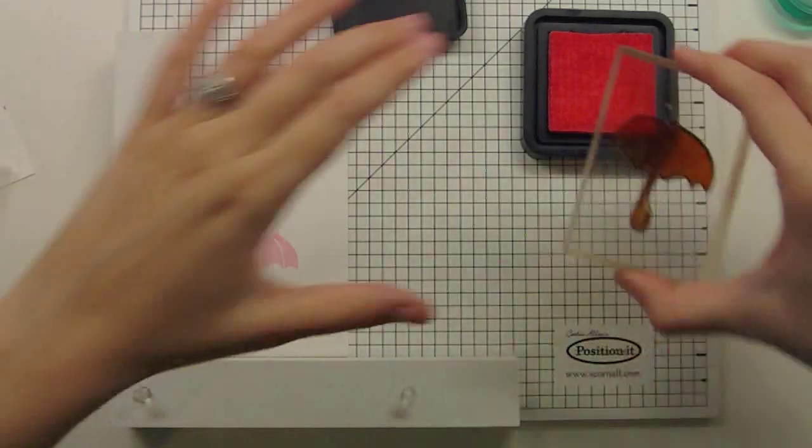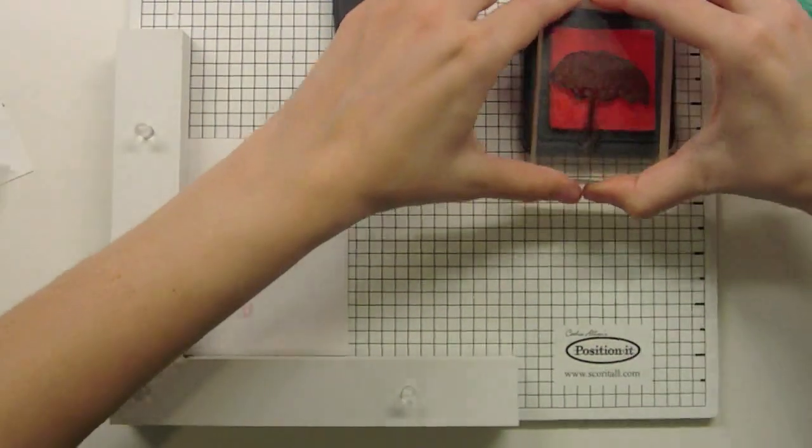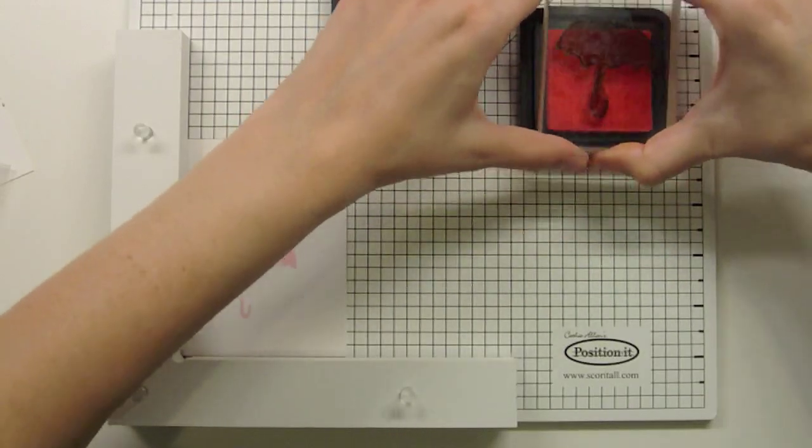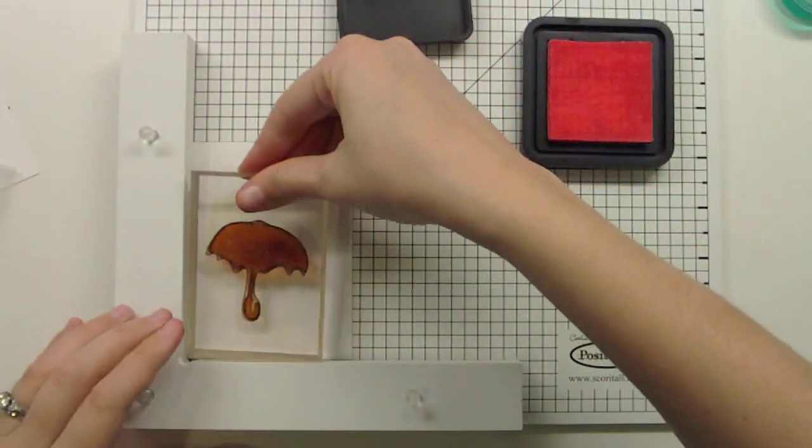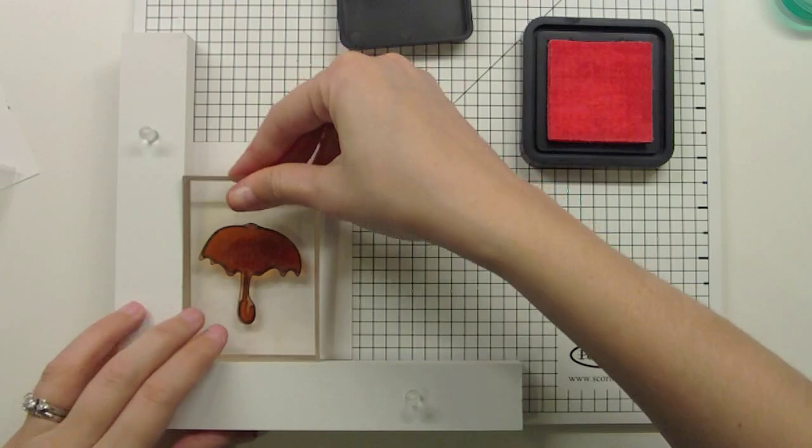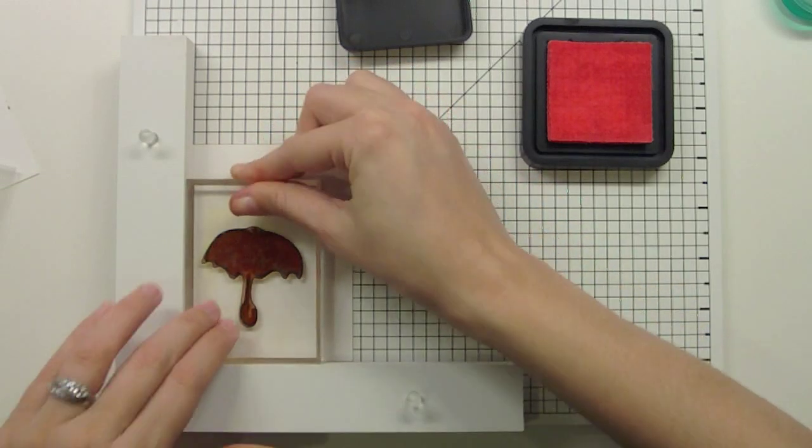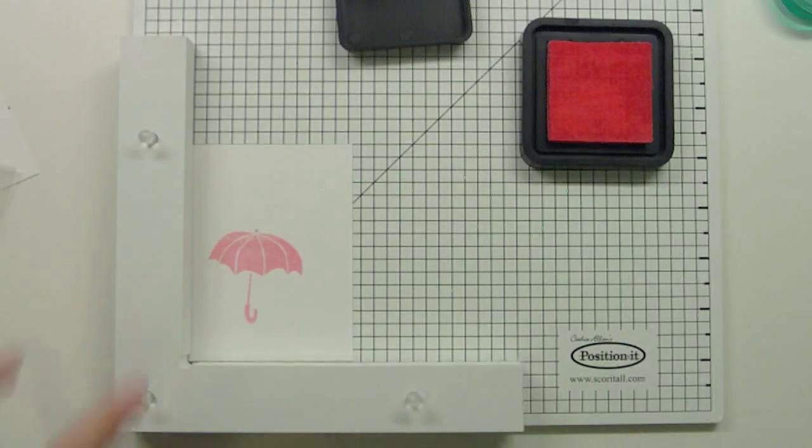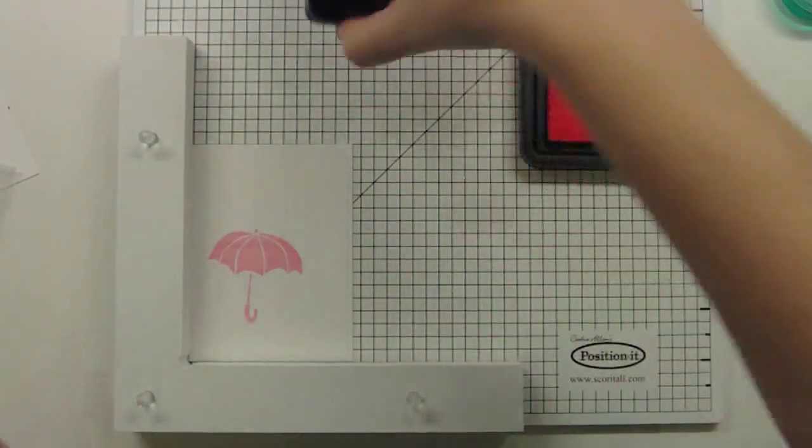Now I definitely want a darker color of this Spun Sugar. The cool thing about Distress Inks is when you layer them, you get a darker color. So this is perfect for using the Position It because I know that I'm going to get exactly over the stamp. So even though it's a clear stamp, this guarantees that I'm not going to get any kind of fuzzy double image. It's going to be perfect.